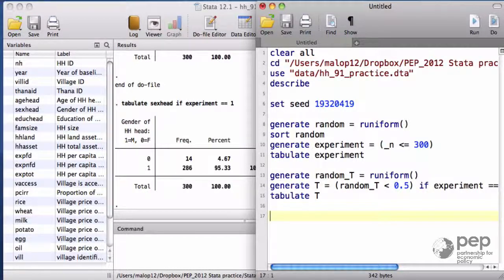Within each gender, individuals have the same probability of being part of the treatment. This is still a randomized control trial. Let me start by sorting the data in a unique order. Sort, sex head, random team.